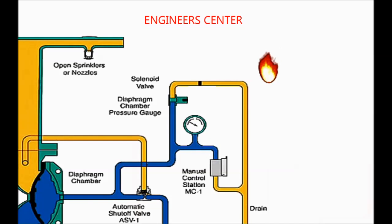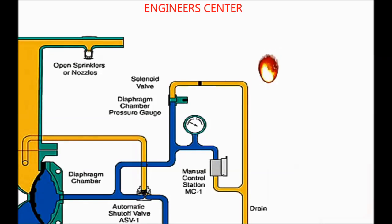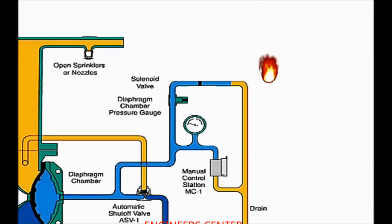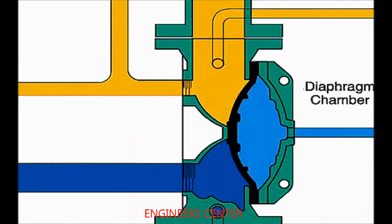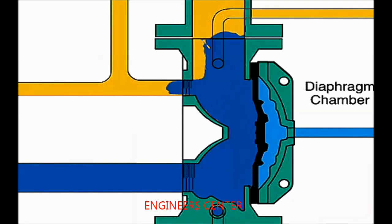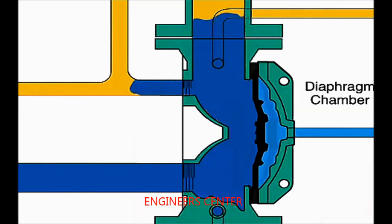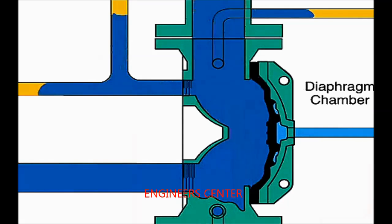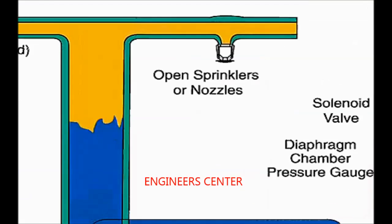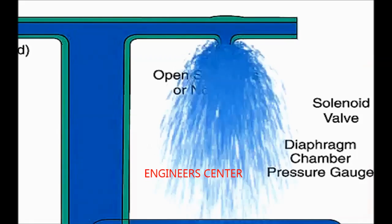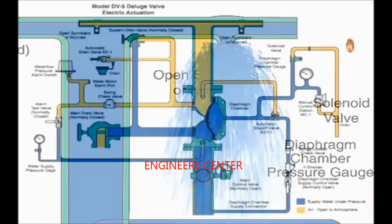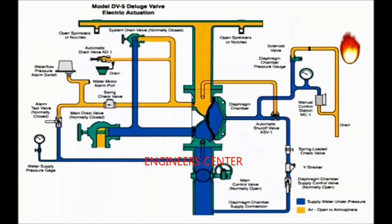In case of fire, when the operator presses the push button in the control room, it sends a signal to the solenoid valve, opening the path to the drain and consequently depressurizing the priming chamber pressure. This causes the water supply to move the diaphragm, pushing it backward to allow the water to reach the sprinklers or nozzles. Let's see the system in action.